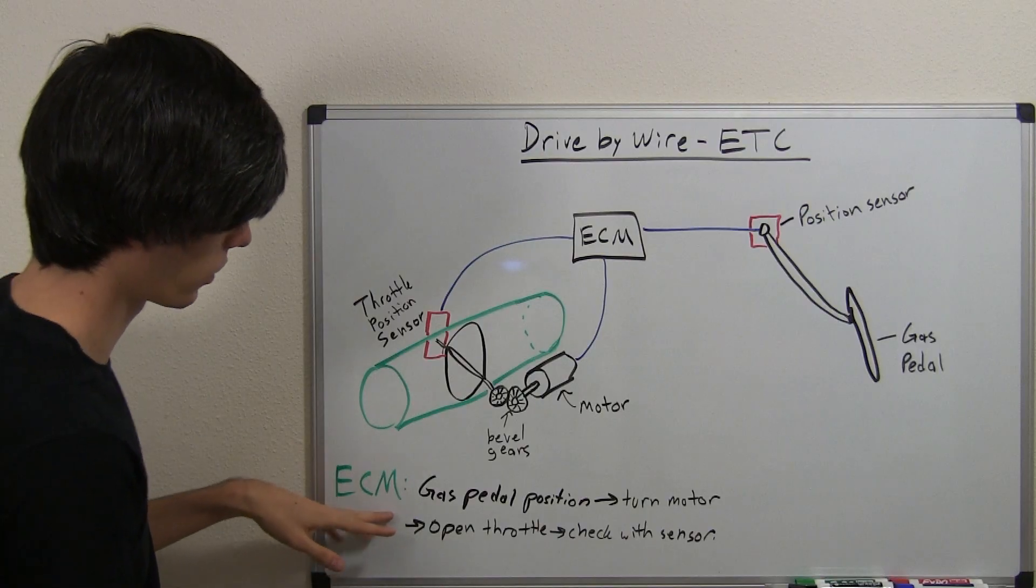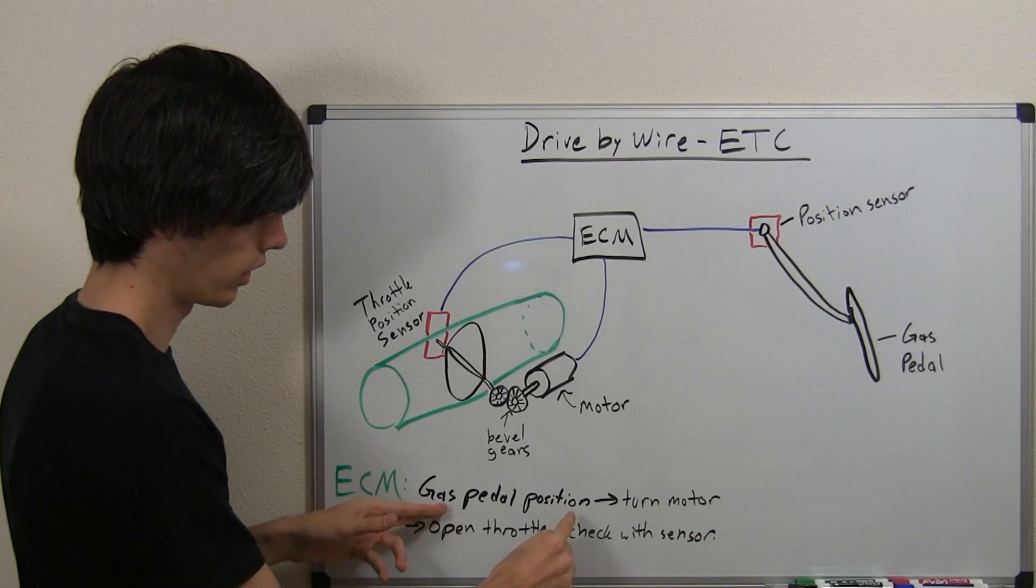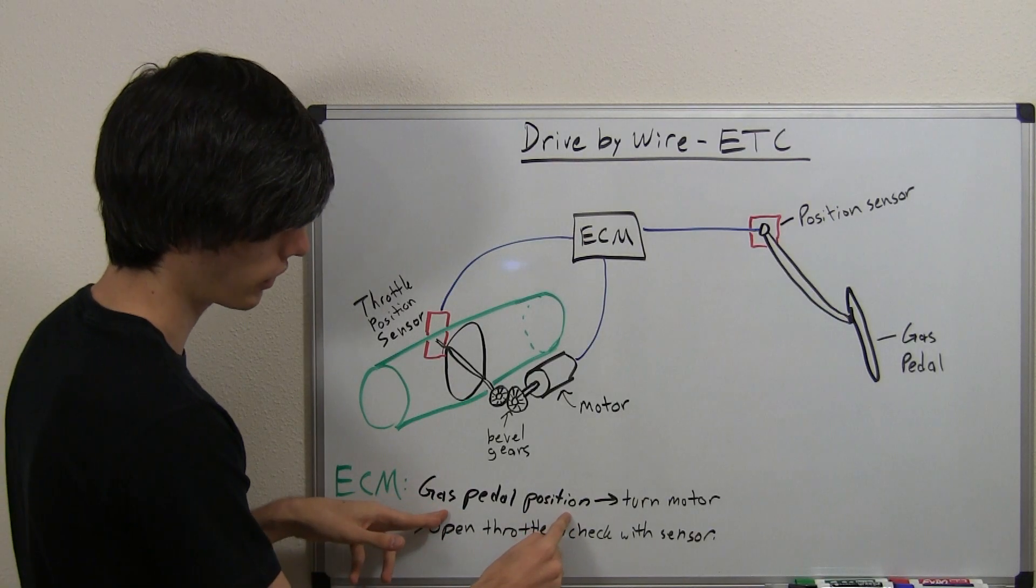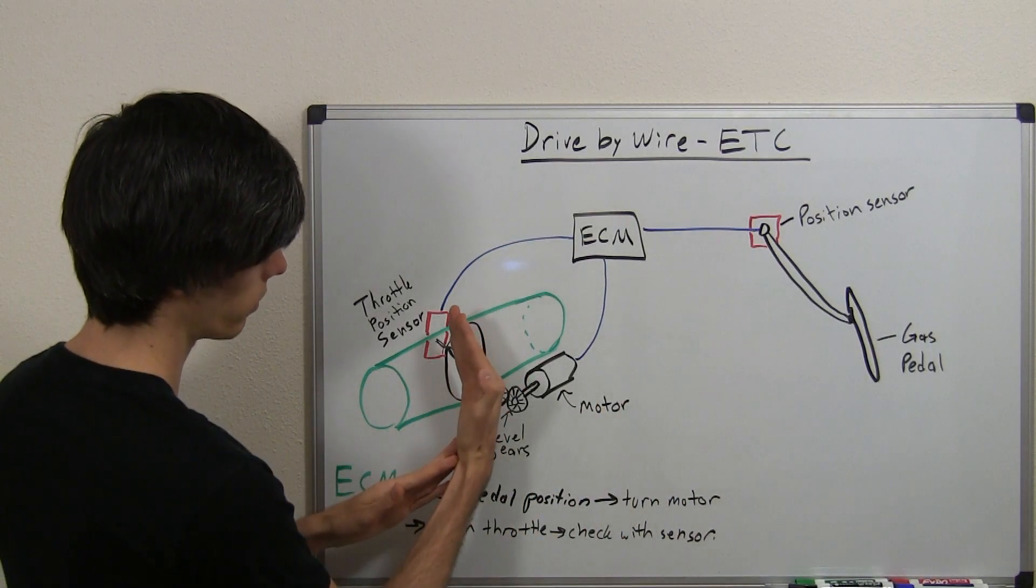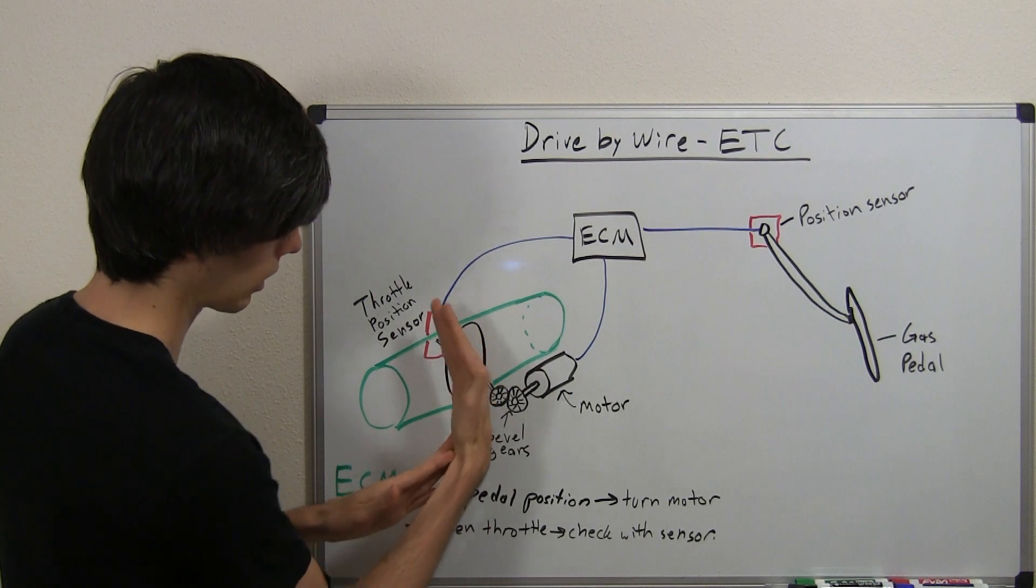So, the process that the engine control module uses is, you've got your gas pedal position, based on that, it rotates the motor. So if you let off the gas, it will rotate the motor so that this butterfly valve goes back to almost a closed position.